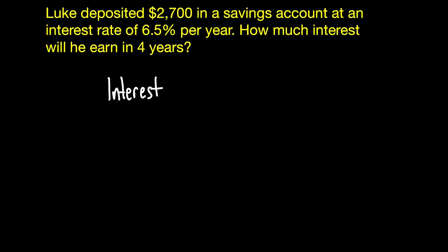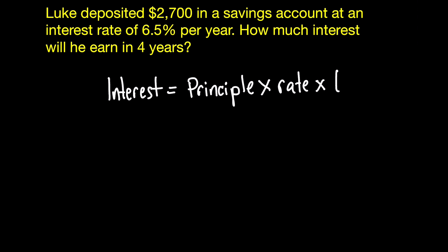The interest is equal to the principal — the principal is the amount that you are saving or depositing in a savings account, as in this case — multiplied by the interest rate that you're getting, multiplied by the time. The time is always calculated in years.